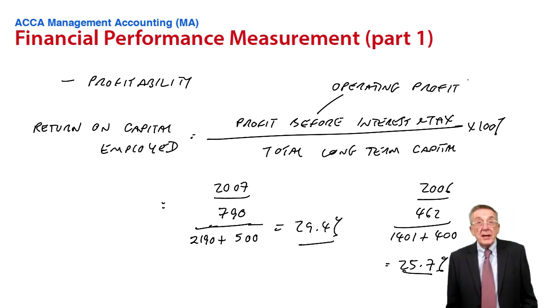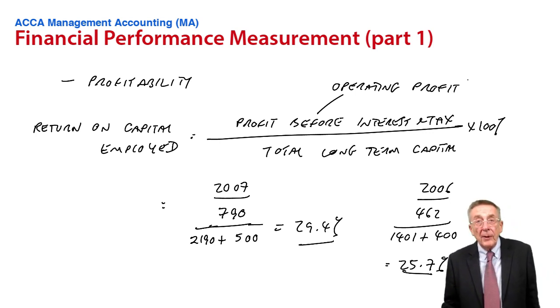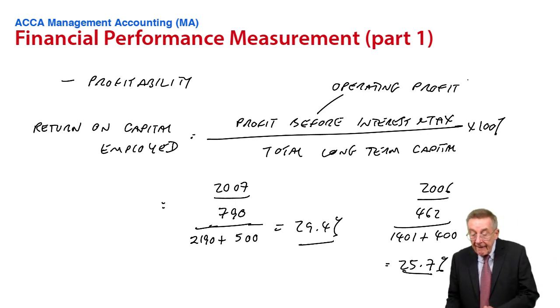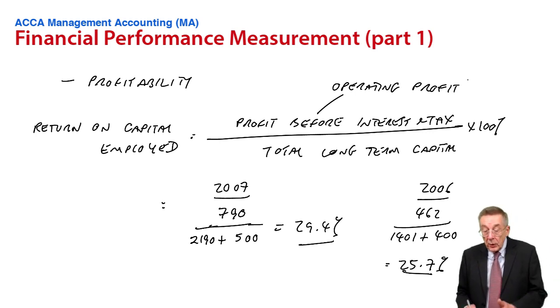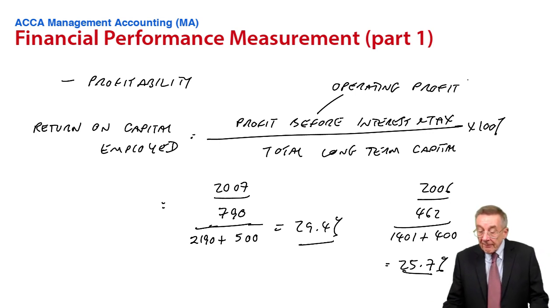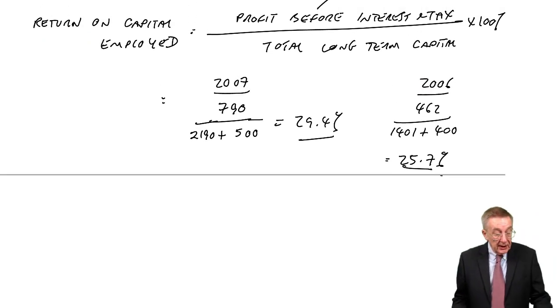The second thing is to be able to comment only briefly. It's later exams where you could expect to write a lot more. But I think fairly obviously here, the long-term capital's gone up. They've raised more money. The profit's gone up as well. But more importantly, in percentage terms, the percent has increased. And sensibly, a company wants that percent to be as high as possible. How can a company increase its return on capital employed?